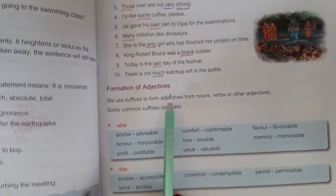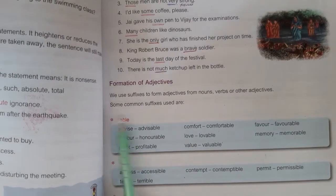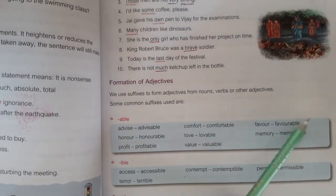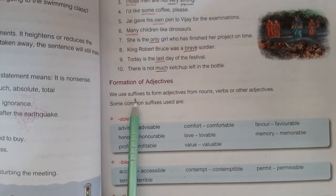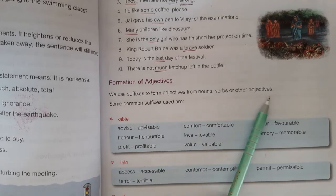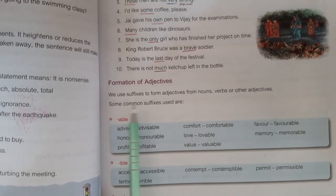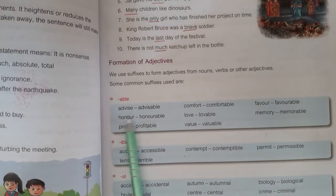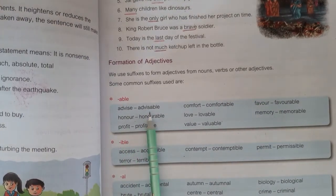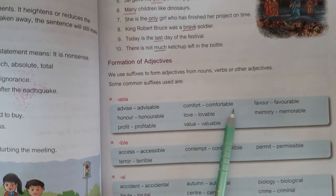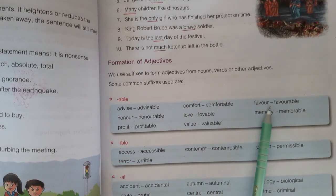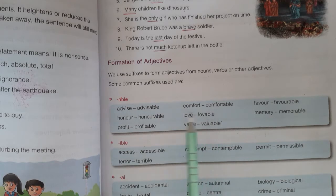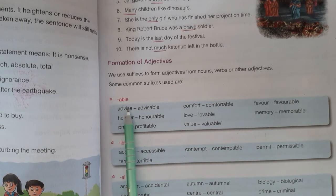Next is formation of adjectives. How do we form these? They are mostly formed by adding suffixes. When we put suffixes to the base word, then we form them. Examples with suffix -able: advise → advisable, comfort → comfortable, favor → favorable, love → loveable.